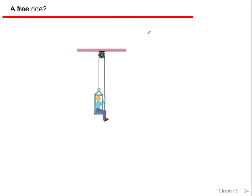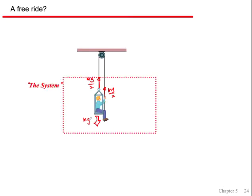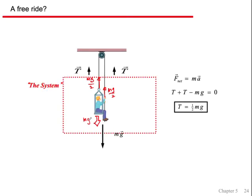Can you get a free ride? This is called a bosun's chair. A rope goes up to a pulley and you've got another rope you pull on — can you lift yourself up? Yes. The force of gravity equals mass of person plus chair. The tension plus the tension — two upward forces on the system — must equal this. So the tension in the rope is mg/2, and the sum of the two upward tensions equals the force of gravity. The tension is one half mg.